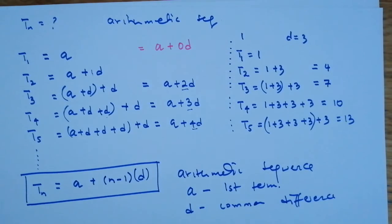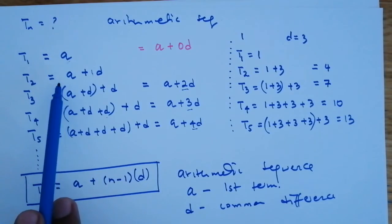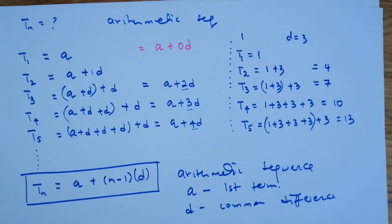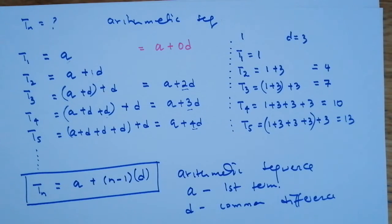To summarize: to get the next term, you add the constant value 'd' to the previous term. If the difference between consecutive terms is not common, then it is not an arithmetic sequence. On the next video, we are going to do examples where we apply this formula in different scenarios. Do stay blessed and enjoy the rest of your day.